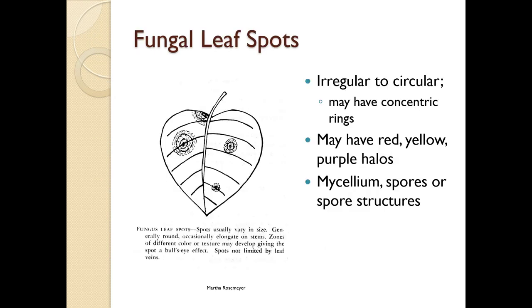Leaf spots are going to be irregular to circular, they may have concentric rings that look like bullseyes, they may have red, yellow, or purple halos, and you may see mycelium, spores, or spore structures associated with them.